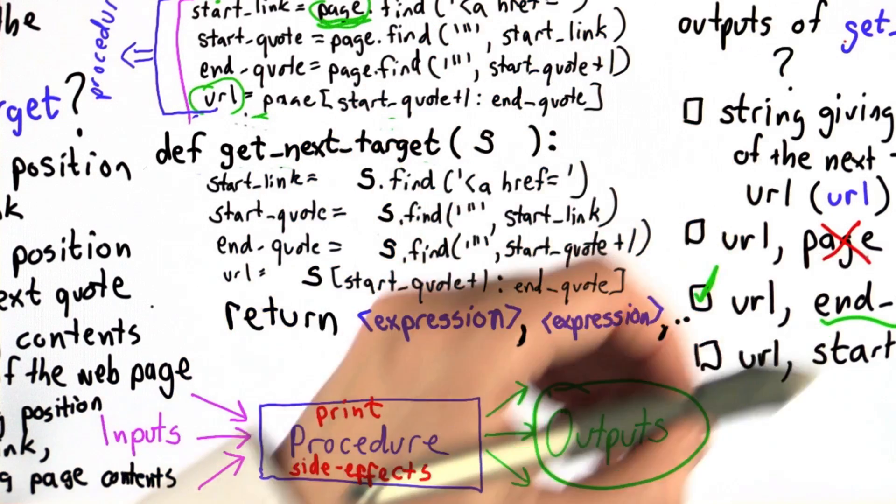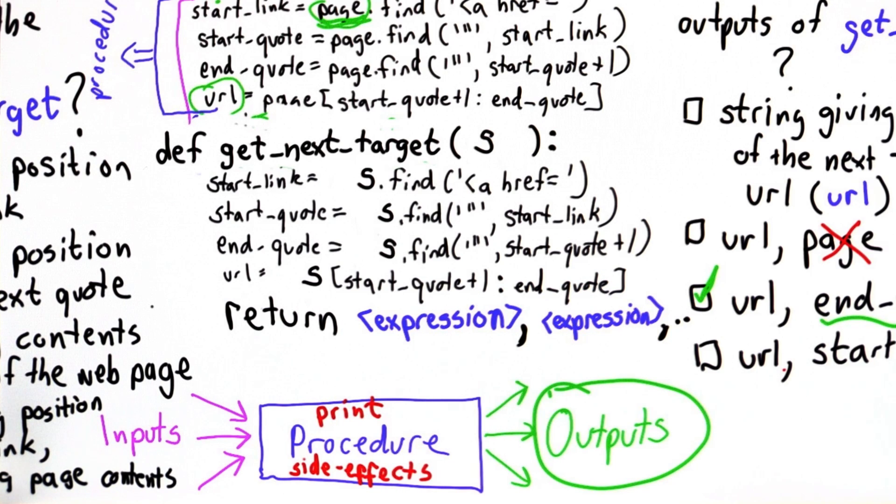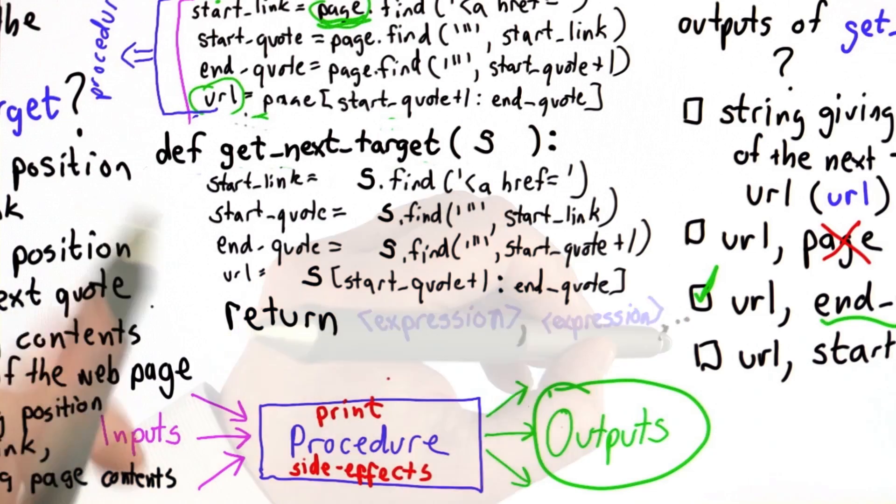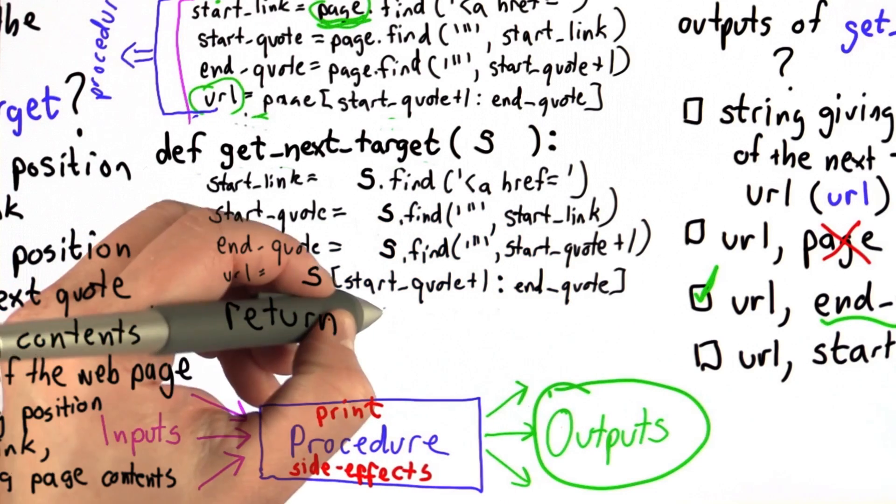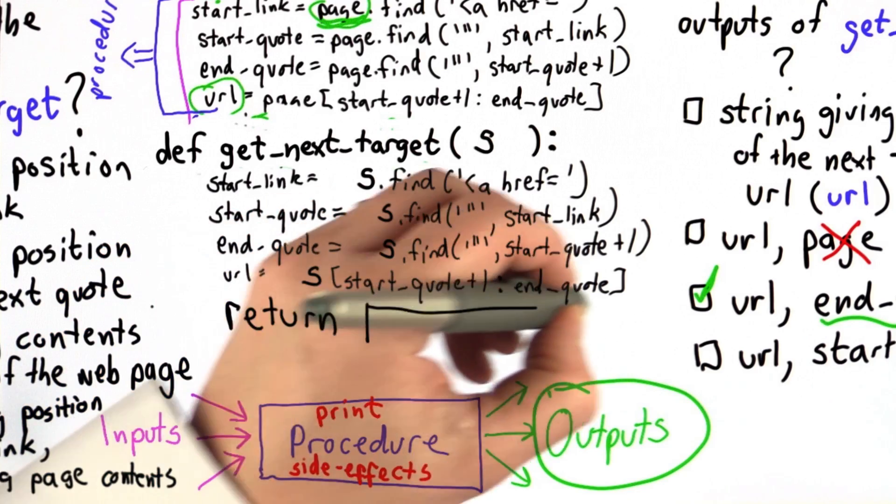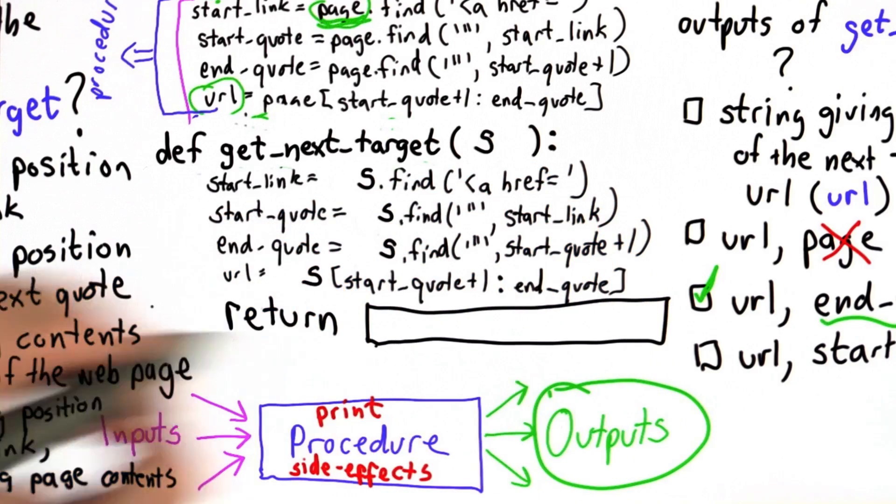And we decided what the output should be are the value of the URL, so we want to find the string that's the next target, and the value of the end quote so we know the position where it was found. So let's see if you can figure out how to finish the return statement. And your goal is to figure out the code that we need after the return to finish this procedure.